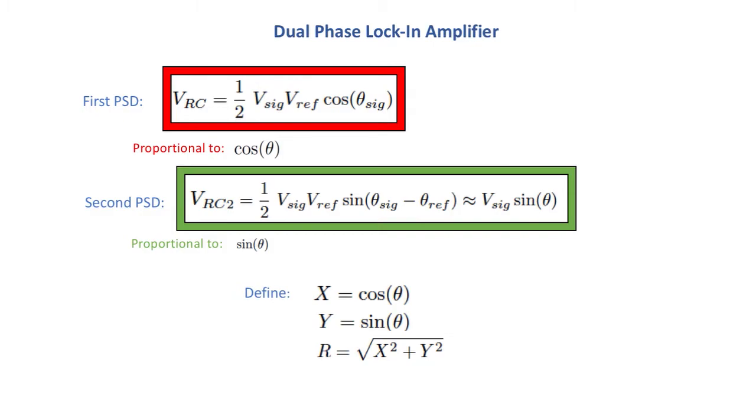X to equal cosine θ, Y to equal sine θ, and R to equal (x² + y²)^(1/2). Now X is called the in phase component because that's the component that's in phase with the reference and Y is called the quadrature or out of phase component and then R is the total sum of the amplitude.